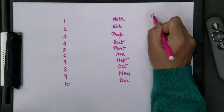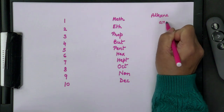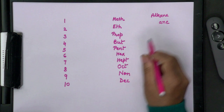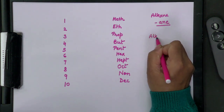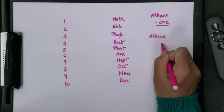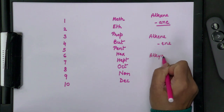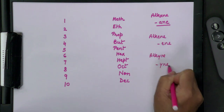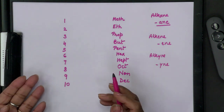Now the suffixes: for alkanes the suffix is '-ane'; for alkenes it is '-ene'; for alkynes it is '-yne'. We add prefix and suffix together to get the name. Keep this in mind as we now apply it to find the names of alkanes, alkenes, and alkynes.